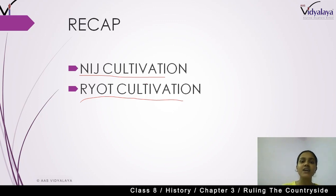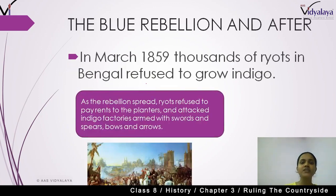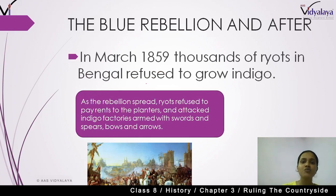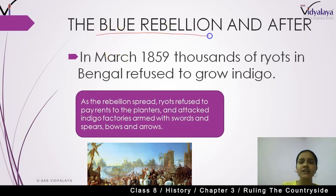After this indigo cultivation, what was forced upon the peasants? This is your topic: the Blue Rebellion and after. Indigo color is blue, and a rebellion is a mass movement of people when they are opposing something. So basically the indigo revolution, which is our blue rebellion, is the indigo revolt.